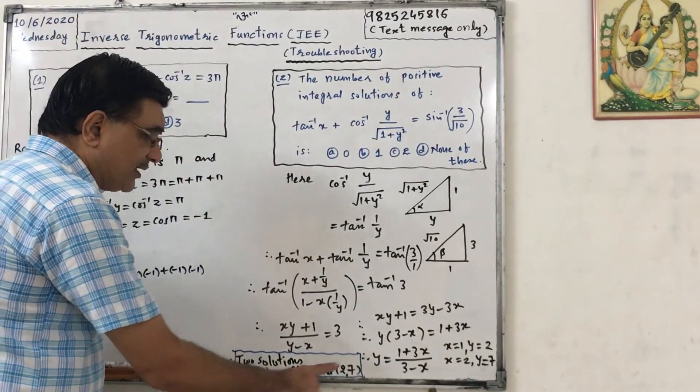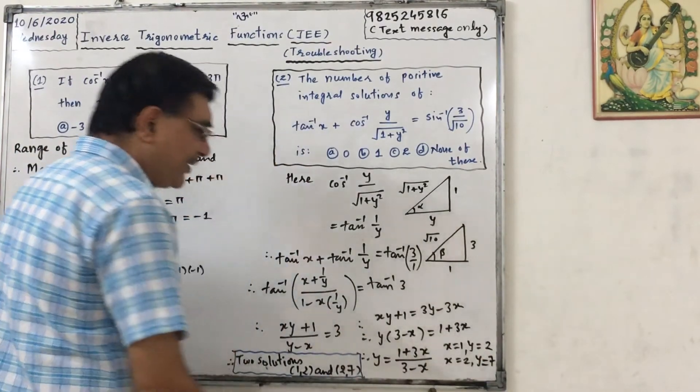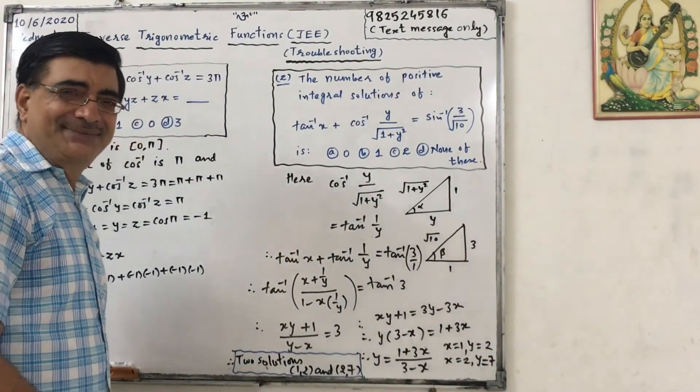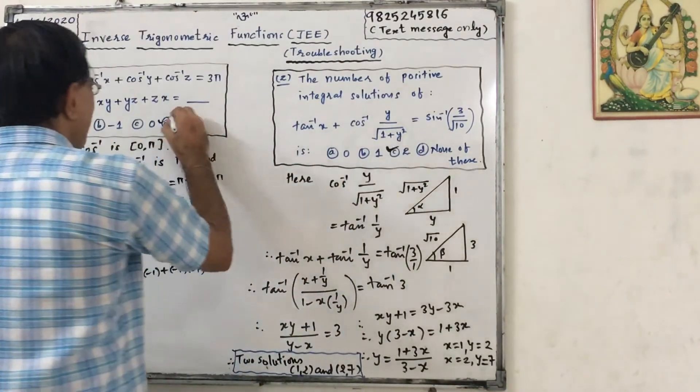So there are 2 solutions: 1 comma 2 and 2 comma 7. Okay, so answer is C. The answer is C.